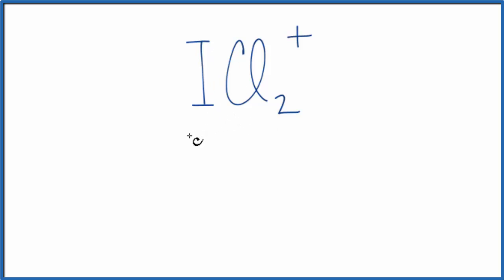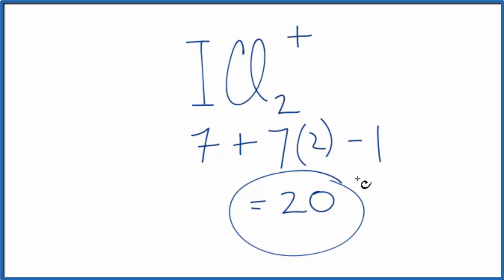Iodine is in group 17, sometimes called 7a, so it has 7 valence electrons. Chlorine is in the same group and also has 7, and we have 2 chlorines. The plus sign means we've lost a negative charge, so we subtract 1. That gives us a total of 20 valence electrons for the ICl2+ Lewis structure.